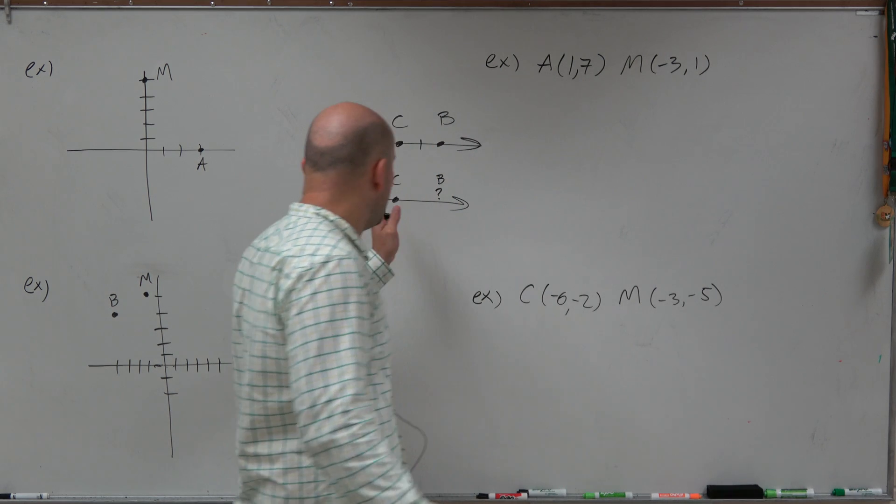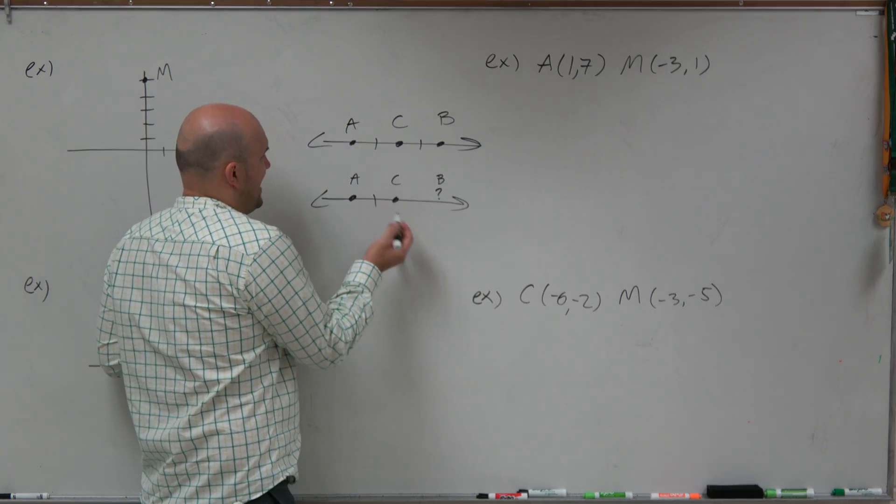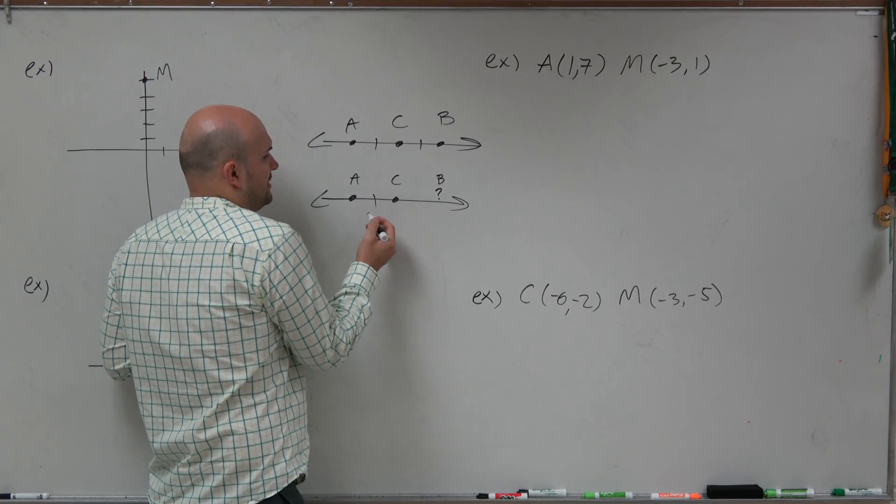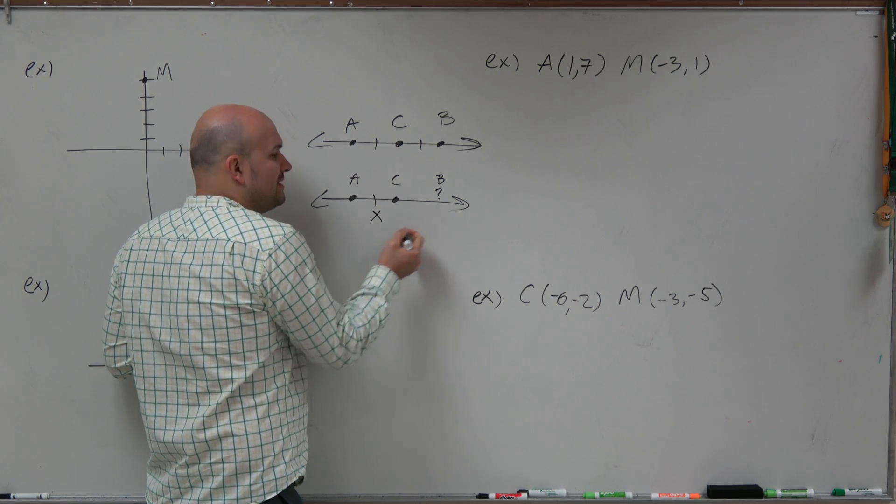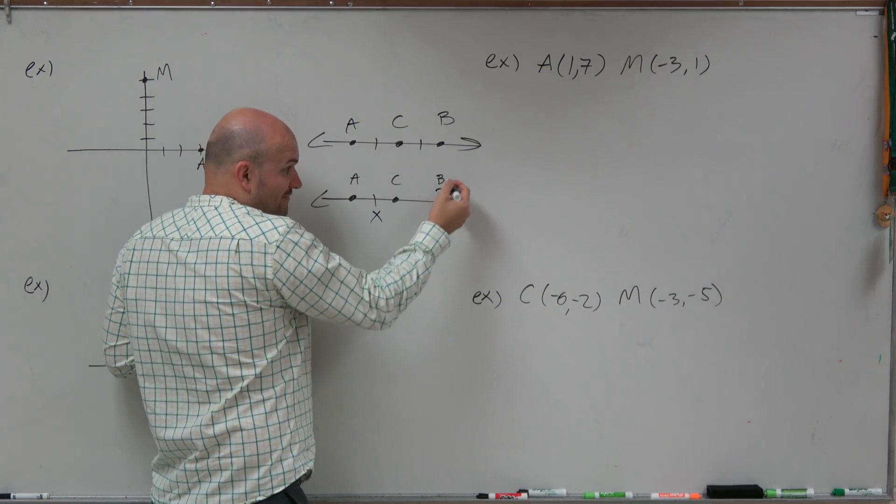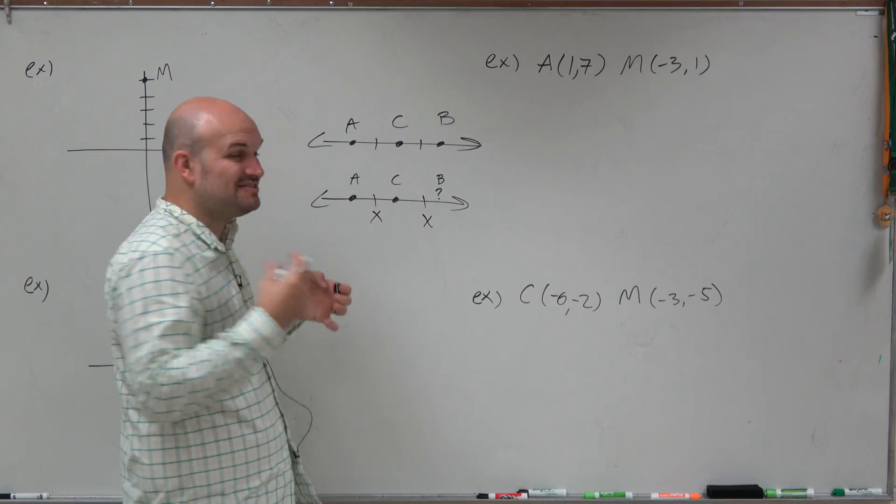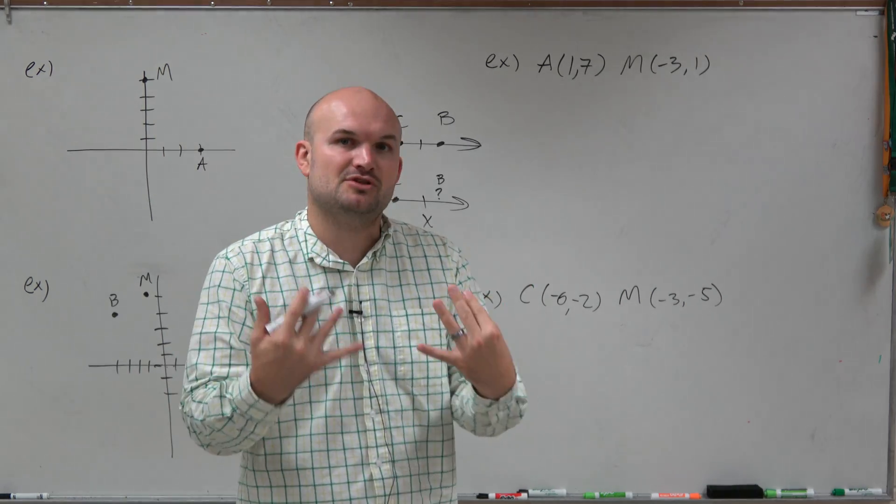Again, the main important thing is, if we know A to C is whatever this value is, let's just call this x, then we know that this distance from C to B, wherever B is, is also going to be x. That's very important for us to conceptually understand.